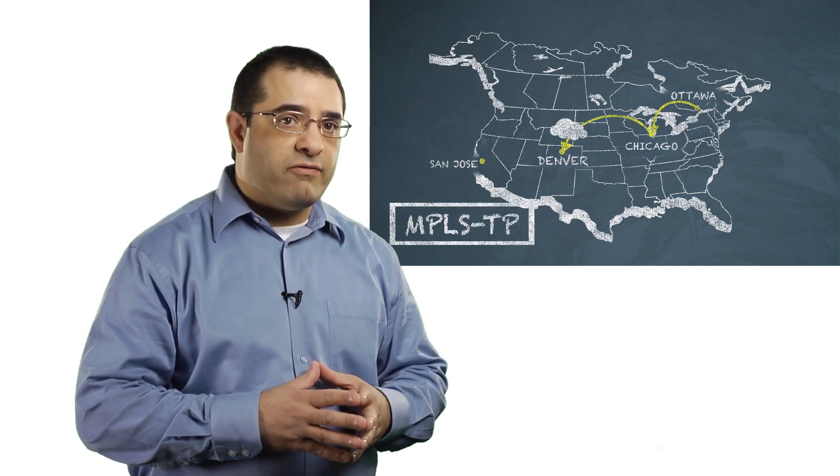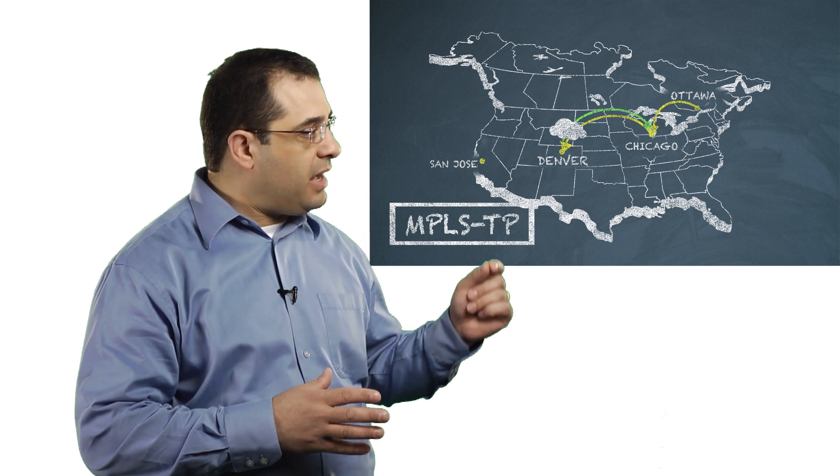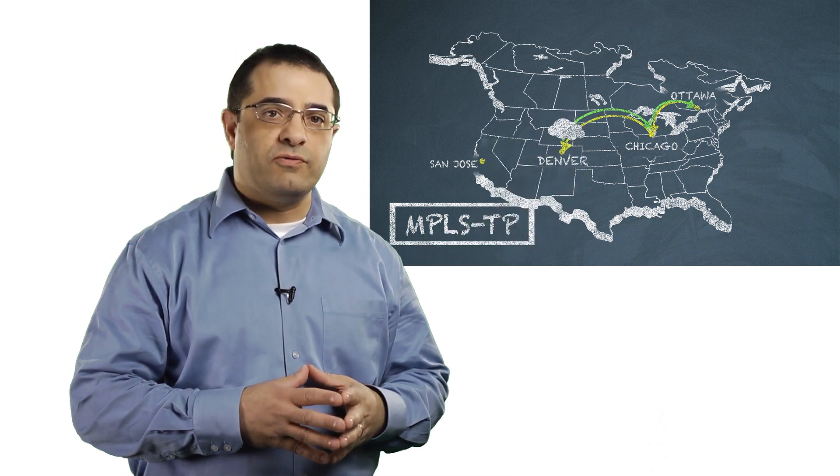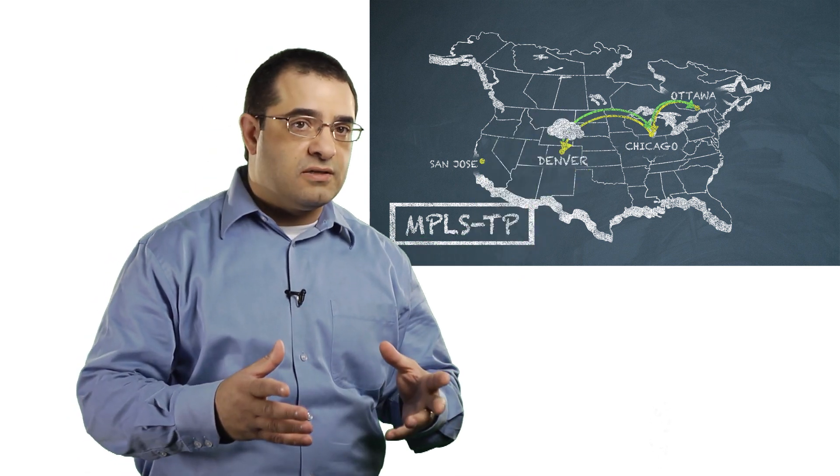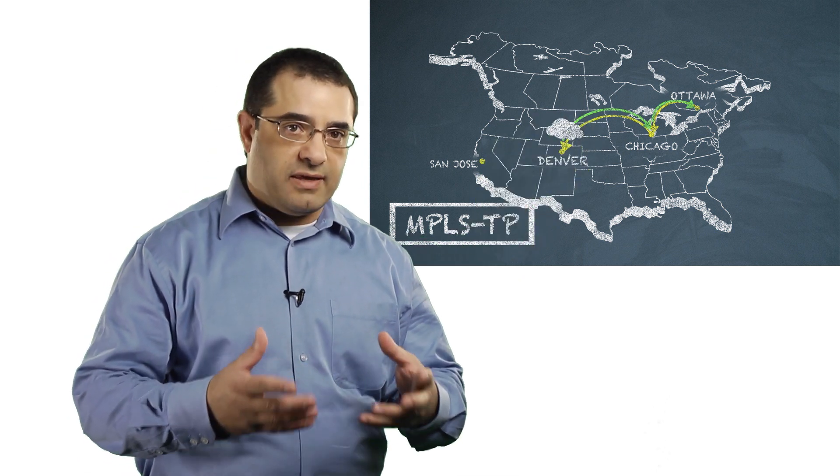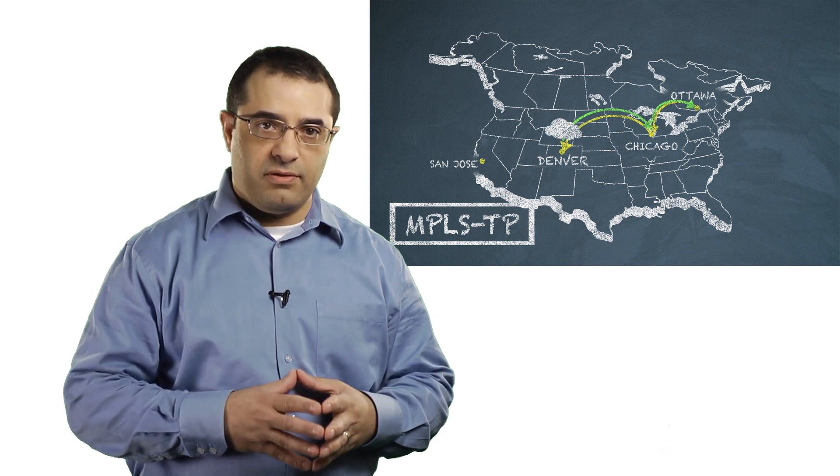With congruent paths, which MPLS-TP guarantees, you do have the ability to communicate back to the source to inform your boss not to take that path and to take an alternate path. So congruency is one difference between MPLS and MPLS-TP, but there are others, and let's explore some of them.